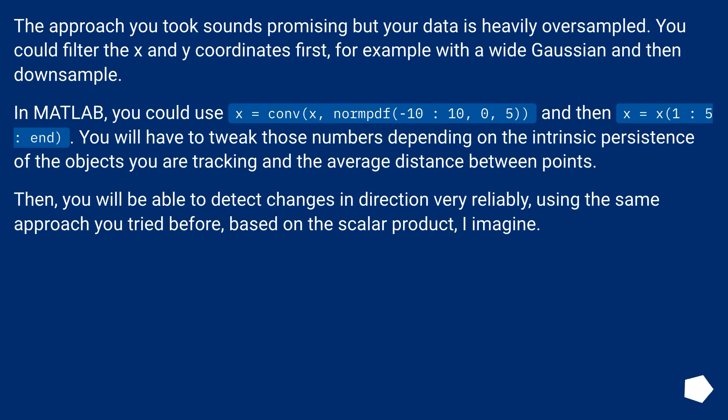The approach you took sounds promising, but your data is heavily oversampled. You could filter the X and Y coordinates first, for example with a wide Gaussian and then downsample. In MATLAB, you could use x = conv(x, normpdf(-10:10, 0, 5)).